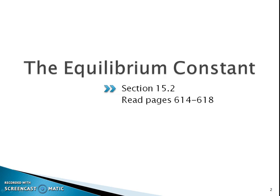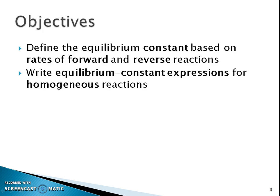This is Mrs. O'Neill for AP Chemistry, Chapter 15, Section 2, The Equilibrium Constant. Your objective for this section is to understand what an equilibrium constant is based on the rates of forward and reverse reactions and how this equilibrium constant expression is for homogeneous reactions.